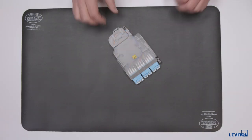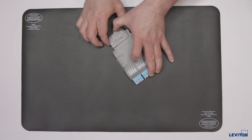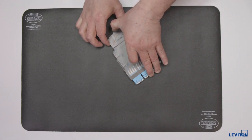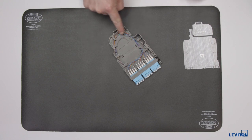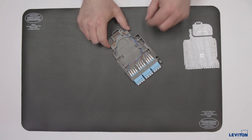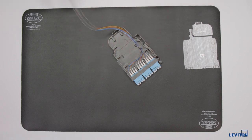The first step in preparing the module for termination is to remove the top lid. Engage the release tab and lift the lid from the rear of the module base. Now you'll see the pigtail with the service coil. Remove the fibers from the tray and lay them out flat.